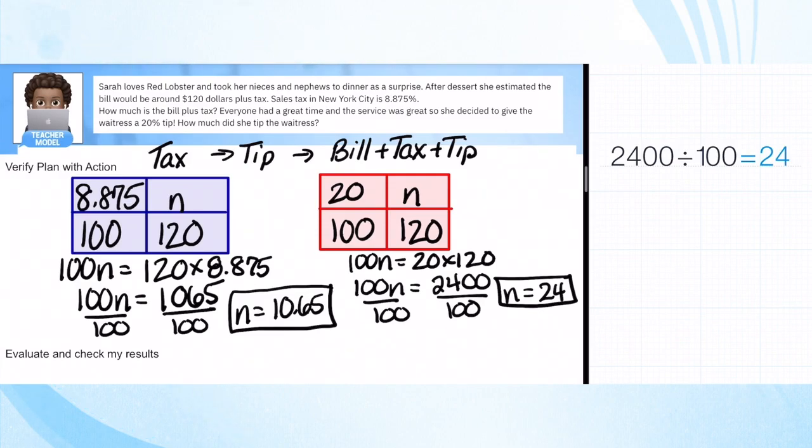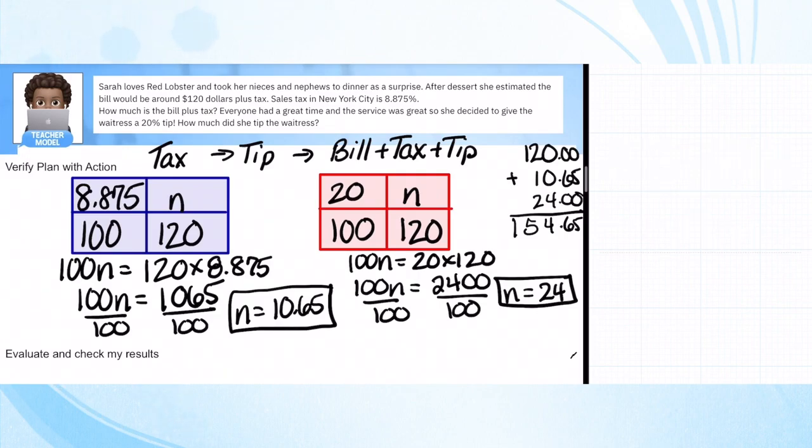Now we're going to figure out the final cost, and that means putting all three parts together: the bill, here's our bill, plus the tax 10.65, plus our tip $24. I want to make sure the decimals are lined up, that's where kids sometimes make mistakes. So we have 65 cents, $4, $5, and once I add that I get $154 and 65 cents. Because I have a calculator, I do want to check. So I'm going to put 120 plus $10.65 plus $24 to verify $154.65. So that's my final cost.